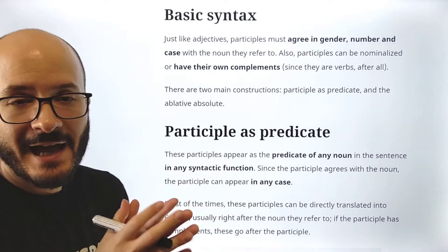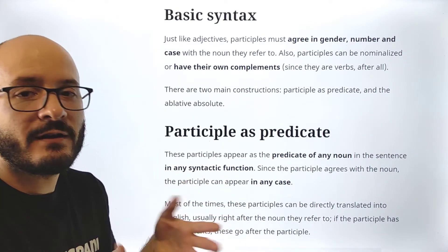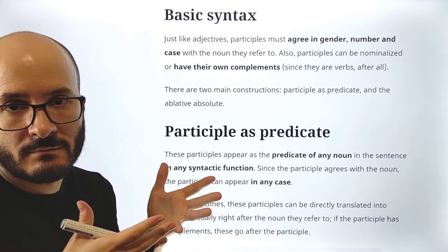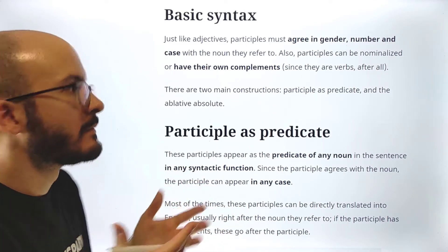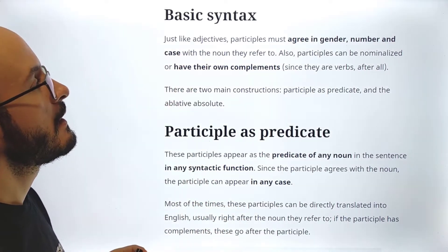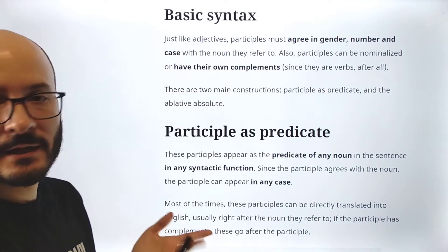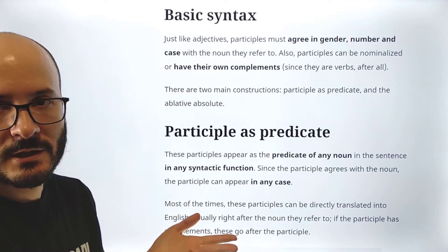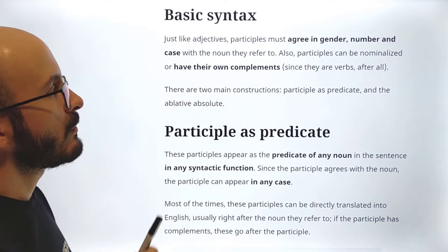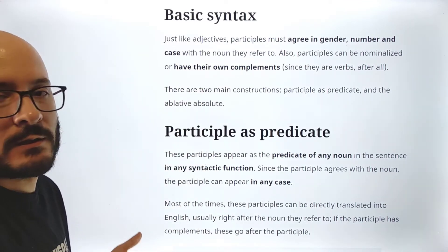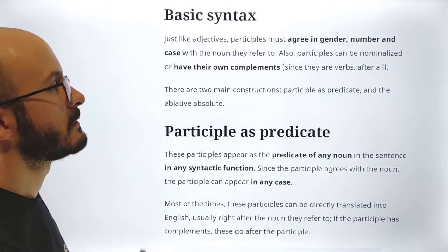Just like adjectives, we said that participles are verbal adjectives, so they are adjectives. Just like adjectives, participles must agree in gender, number, and case with the noun they refer to. This is super normal — we know this.